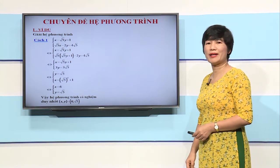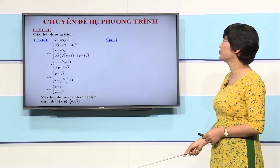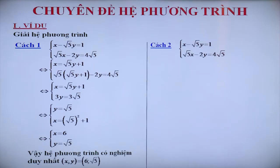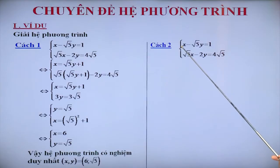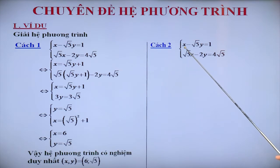Tiếp theo, chúng ta sẽ giải hệ phương trình này bằng phương pháp cộng. Phương pháp cộng thường được sử dụng khi các hệ số của cùng một ẩn trong hệ phương trình bằng nhau hoặc đối nhau. Quan sát hệ phương trình đã cho, cô thấy hệ số của X trong phương trình thứ nhất là 1, hệ số của X ở phương trình thứ 2 là căn 5. Nên cô sẽ nhân cả 2 vế của phương trình thứ nhất với căn 5 và giữ nguyên phương trình thứ 2.